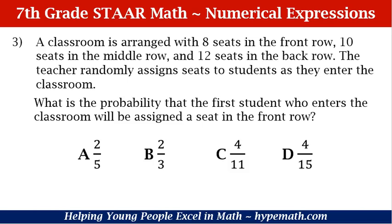Let's move to question number three. A classroom is arranged with eight seats in the front row, ten seats in the middle row, and twelve seats in the back row. The teacher randomly assigns seats to students as they enter the classroom. What is the probability that the first student who enters the classroom will be assigned a seat in the front row? A: two-fifths, B: two out of three, C: four out of eleven, D: four out of fifteen.